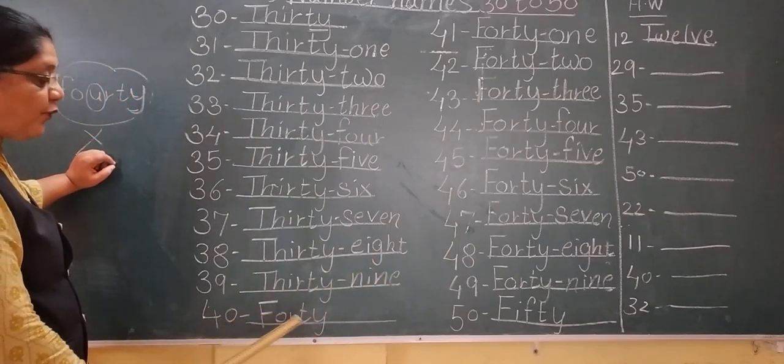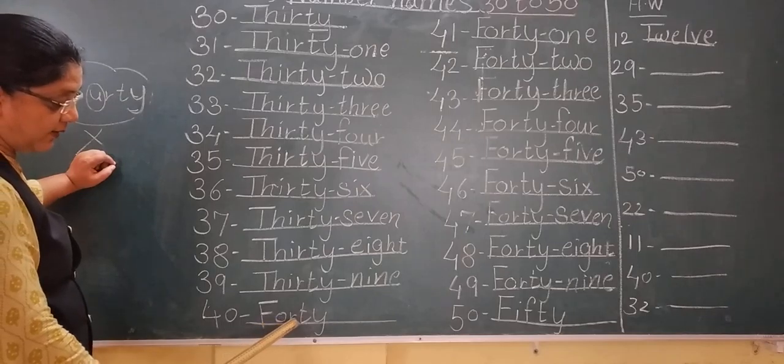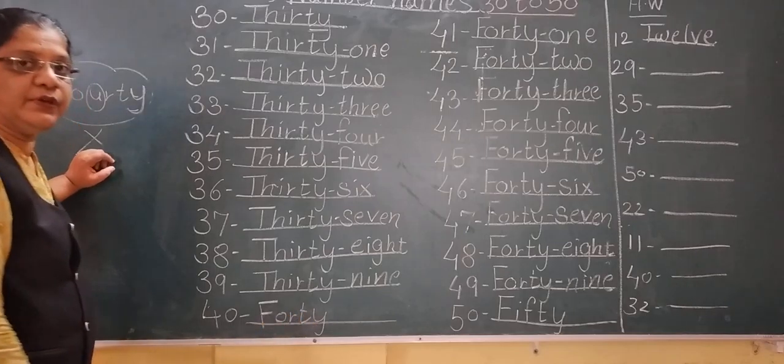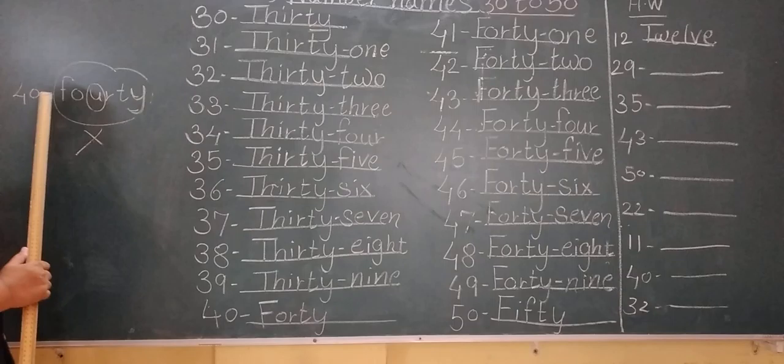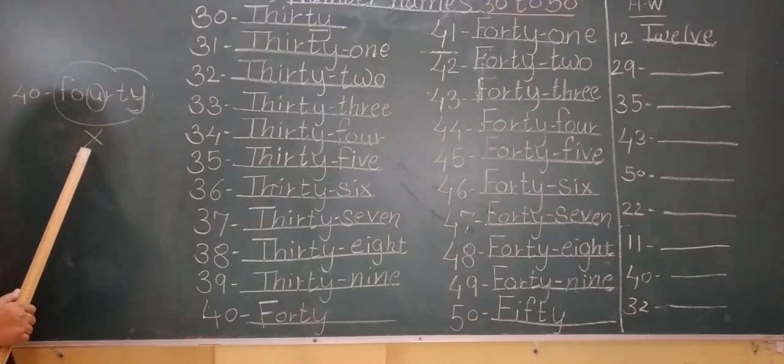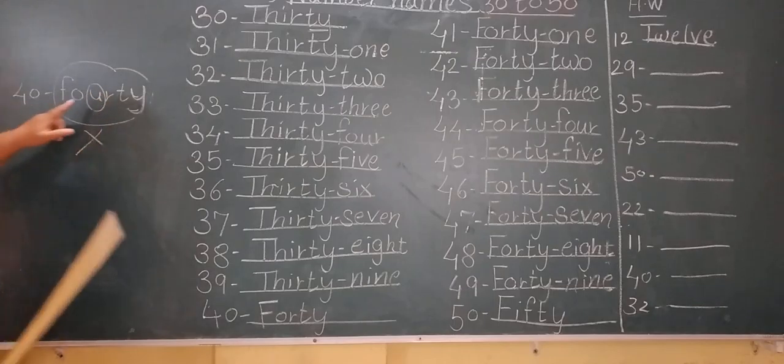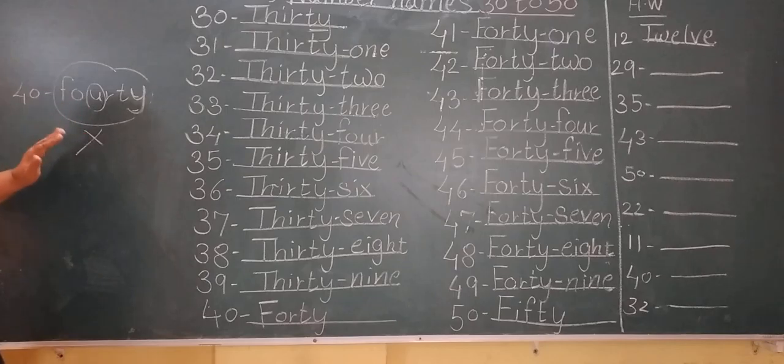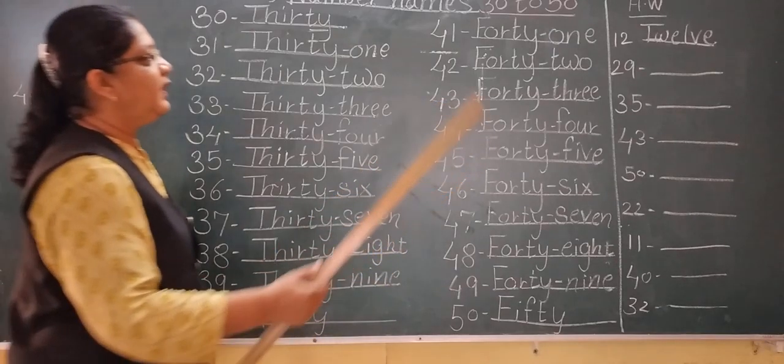40. 40. Then see now. F-O-U-R-T-Y. This is the wrong spelling. See? U is not there. Only F-O-R-T-Y. U is not there. So F-O-U-R. This is the wrong spelling.